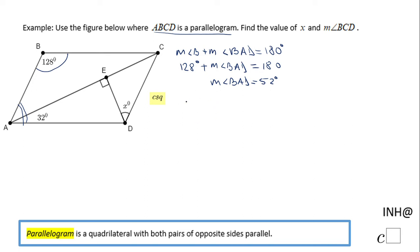If you take a look, BAD and angle BCD that we need to find out are congruent. They are opposite angles, so let me write that here: opposite angles in a parallelogram, angle BAD congruent with angle BCD.